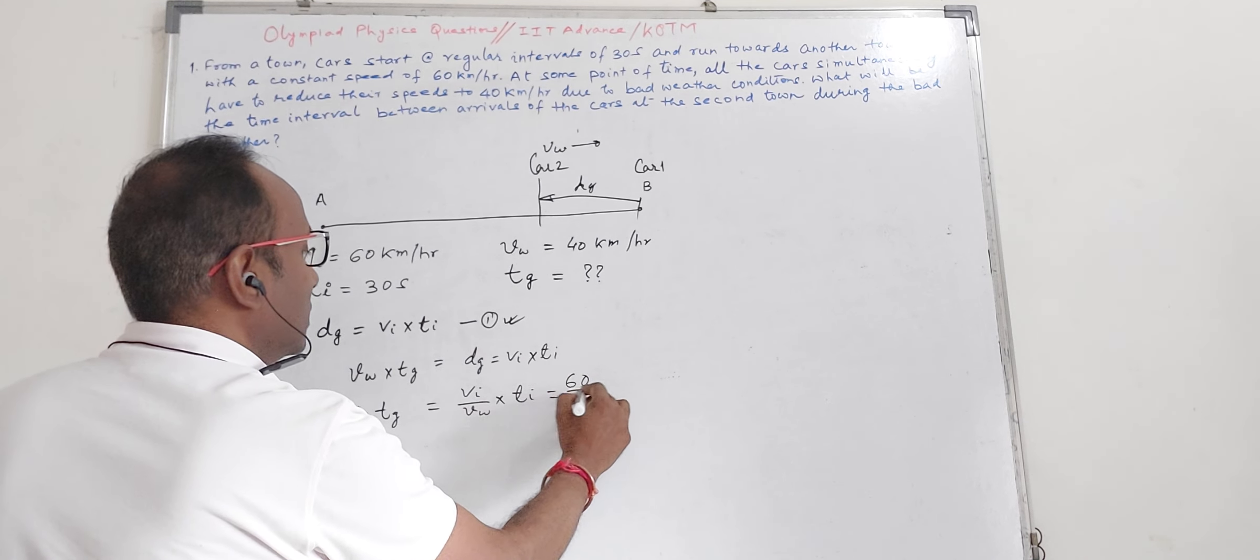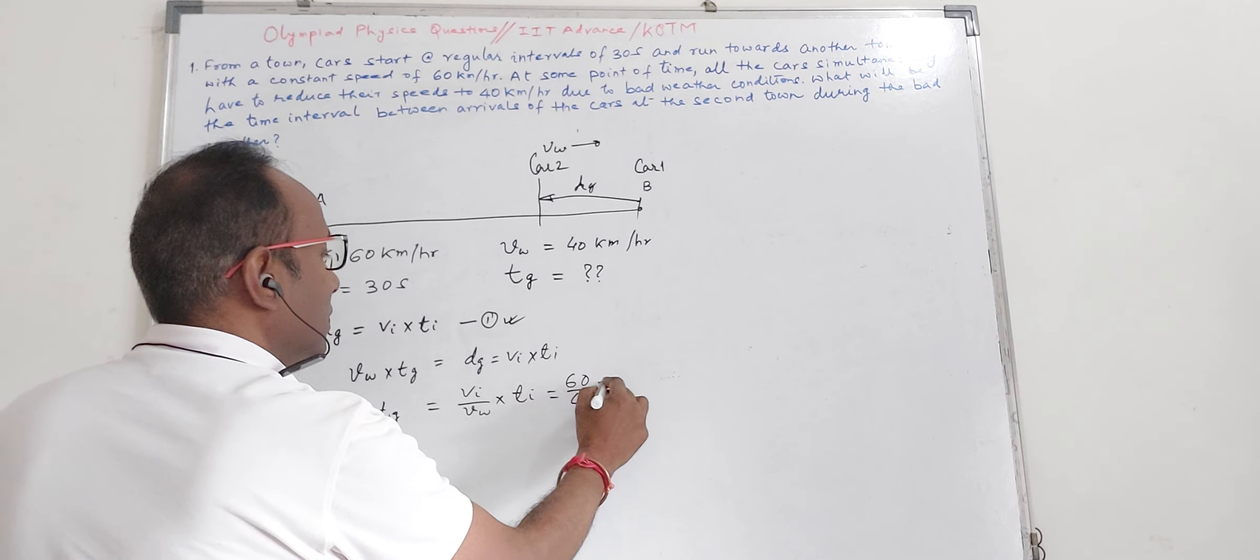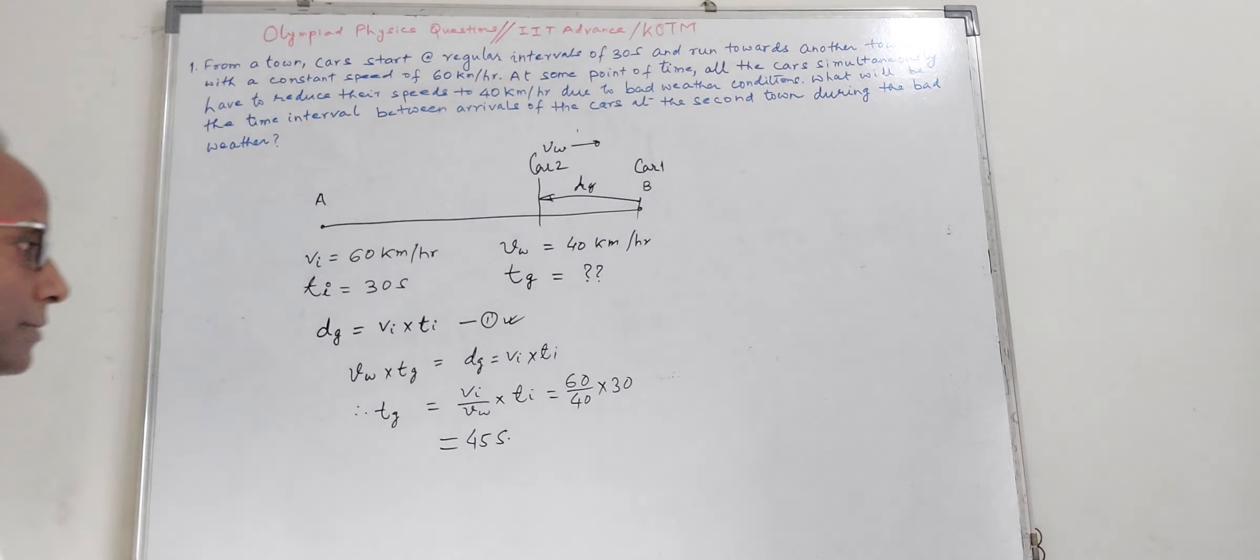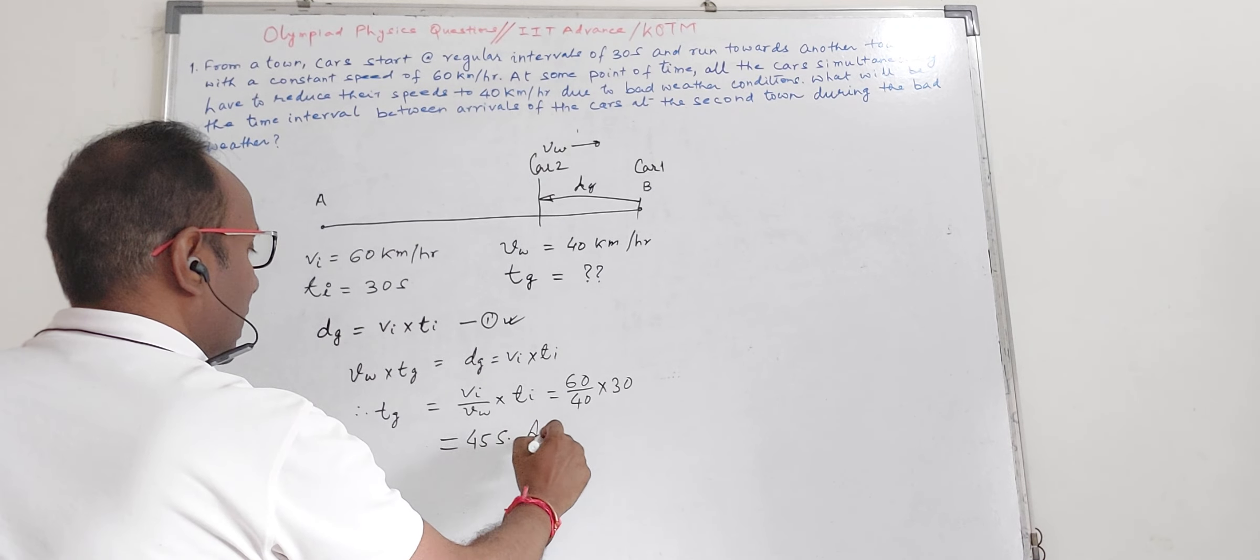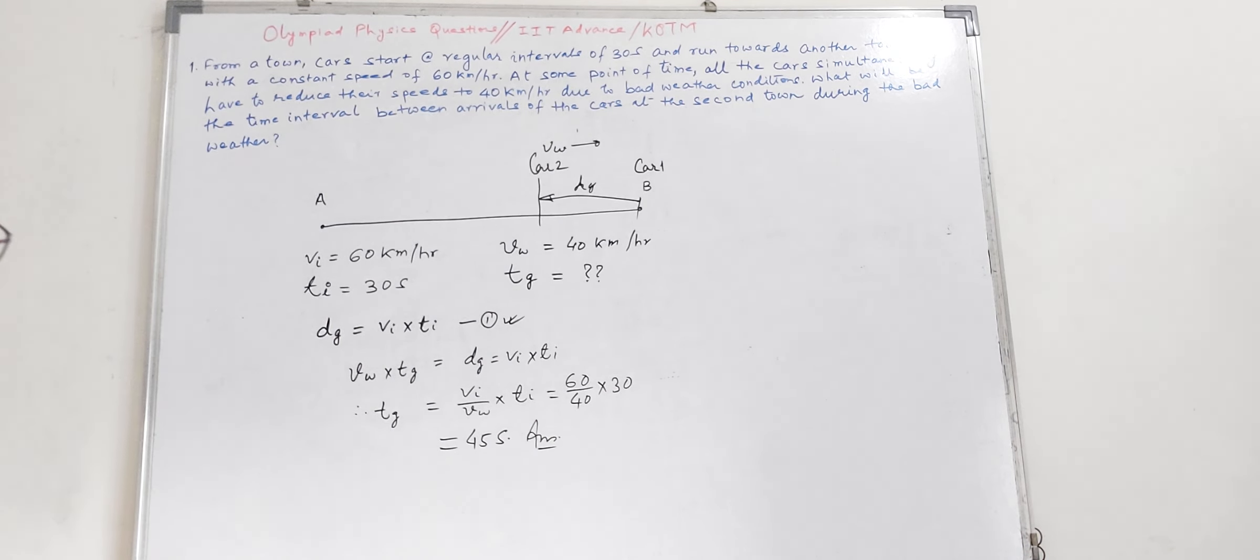60 by 40 into 30 and that is 45 seconds. This is your answer. Because all cars are at the same speed, if car 2 reaches 45 seconds after car 1, then car 3 will be reaching 45 seconds after car 2 reaches at B and so on.